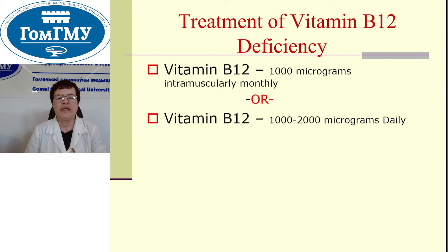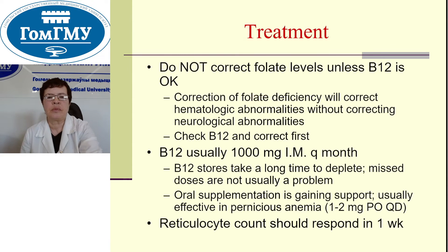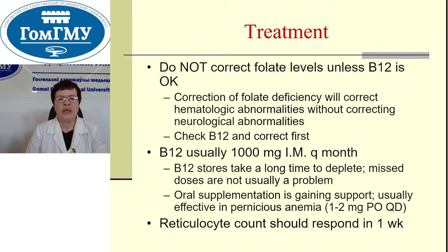Treatment of vitamin B12 deficiency: vitamin B12 intramuscularly 1000 micrograms monthly, or orally 1000 to 2000 micrograms daily. Do not correct folate levels unless B12 is addressed first, because correction of folate deficiency will correct hematologic abnormalities without correcting neurological abnormalities. B12 stores take a long time to deplete, and missed doses are not usually a problem. Oral supplementation is usually effective even in pernicious anemia. Reticulocyte count should respond within one week.